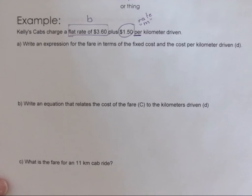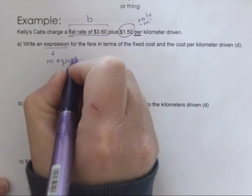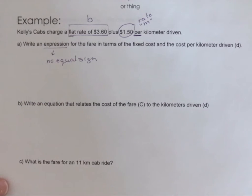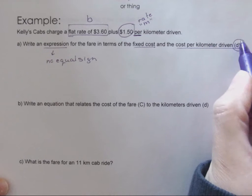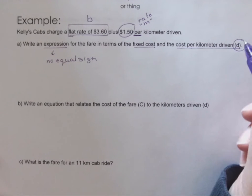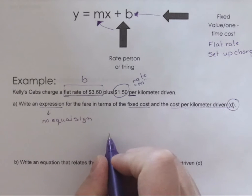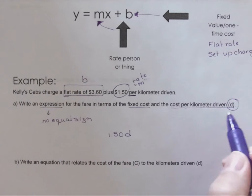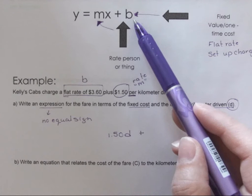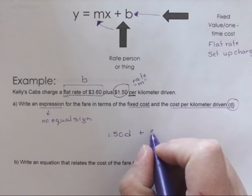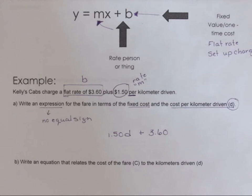Write an expression for the fare. Okay, so expression we know has no equal sign. This is what we were doing in polynomials. In terms of the fixed cost and cost per kilometer driven. We know that we take the rate and we're going to times it by our variable. So the rate is a dollar fifty per kilometers driven and that is my d variable, and then we're going to add to it the fixed rate, and the flat rate in this is three dollars and sixty cents. So that's the expression because it has no equal sign and it has one variable in it.